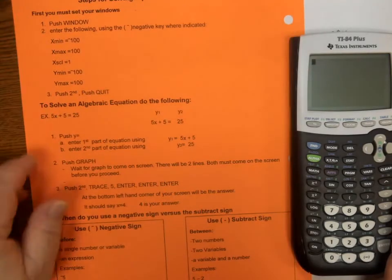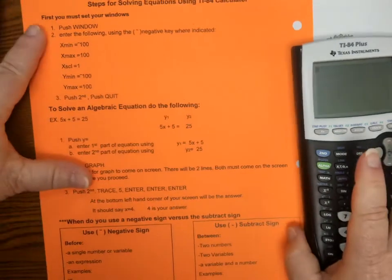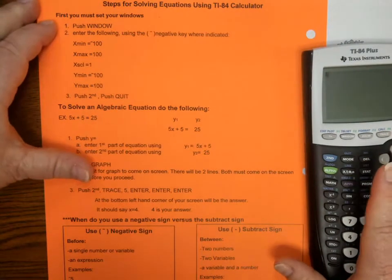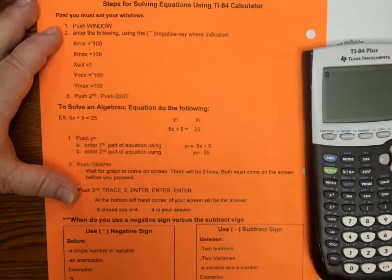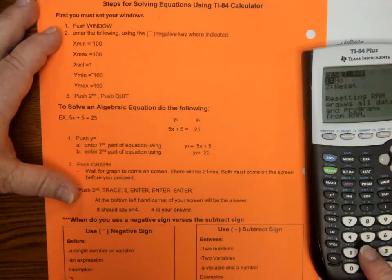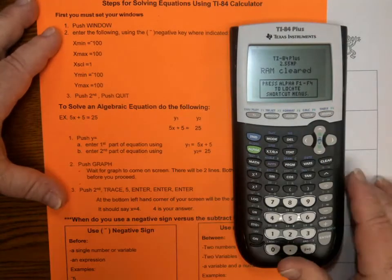First thing I'm going to look at, it says steps for solving equations using the TI-84 calculator. That's at the top of your paper. First, you must set your windows. So, first thing I'm going to do is 2nd plus 7 1 2. And I'm going to clear my RAM, make sure all my memory is clear.